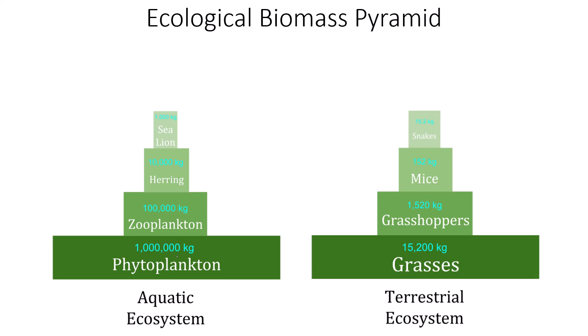In an aquatic ecosystem example, if we were to collect and weigh all the phytoplankton — essentially the dry mass — we would get 1 million kilograms. That 1 million kg of phytoplankton can support 100,000 kg of zooplankton. That much zooplankton supports 10,000 kg of herring. And 10,000 kg of herring can support 1,000 kg of sea lion — which might actually be just one sea lion.